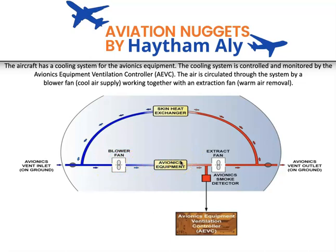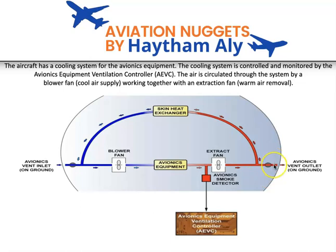The third configuration is the intermediate configuration. In this configuration, the skin air inlet valve is closed and the skin air outlet valve is partially open. This third configuration is used in the avionics smoke procedure.